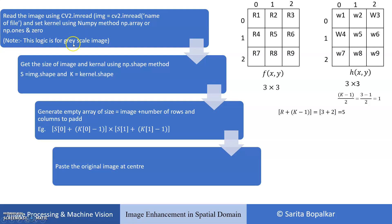The algorithm steps are: read the image, then set your kernel. Once you read the image and set your kernel, get the size of the image and kernel, then set an empty matrix. The number of rows and columns we need to pad is calculated using the formula (k minus 1) divided by 2, where k is the size of the kernel.